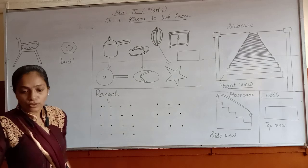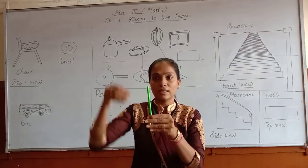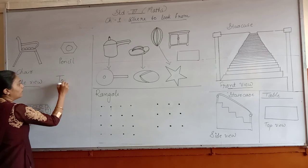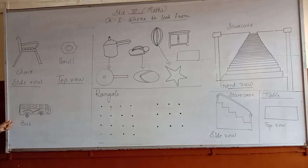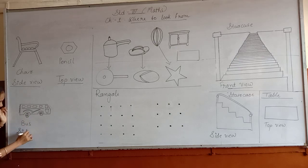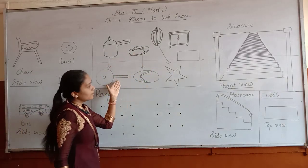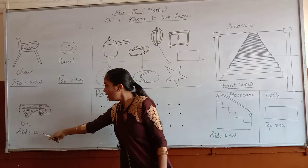Then the next is a pencil. Which view is this? This is the top view of a pencil — if you see this pencil from the top, you will get this picture. So here you will write: top view. Next is also a picture of a pencil — this is the side view of a pencil, so here you will write: side view. Here we have seen different views of different things: top view, front view, side view.